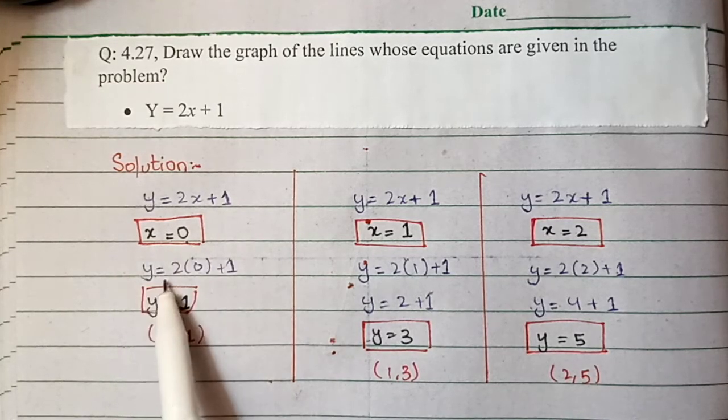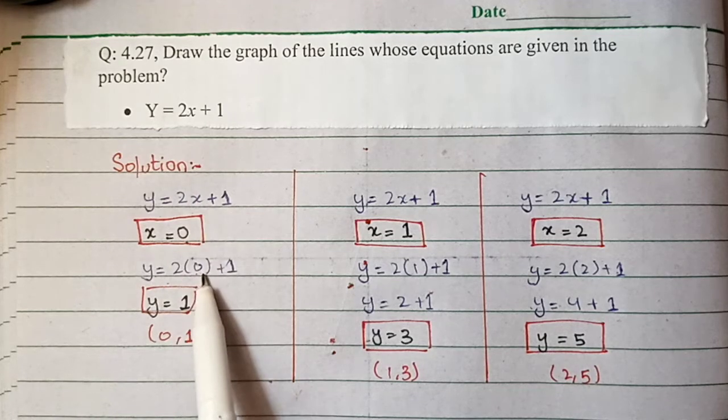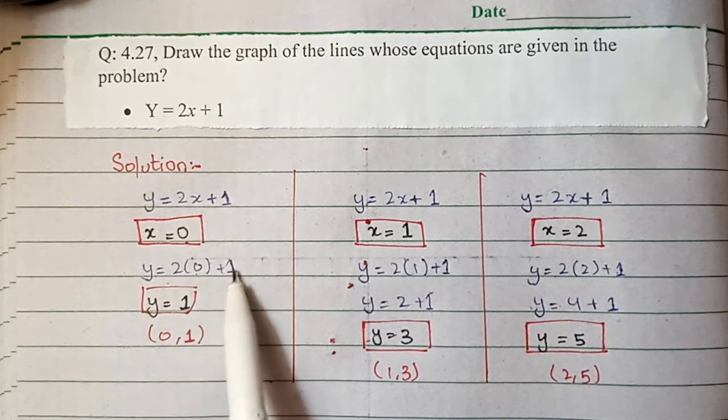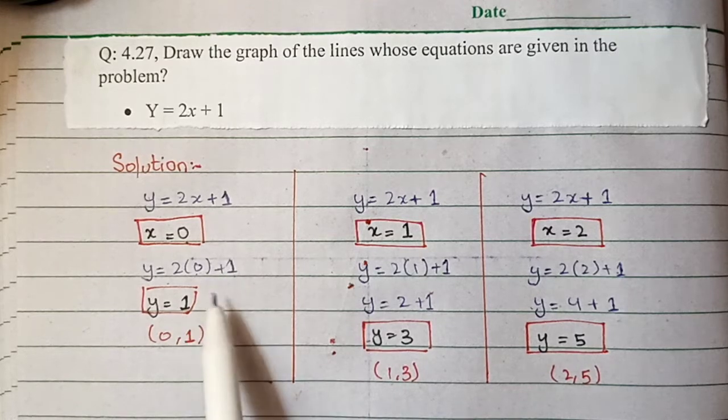So Y = 2(0) + 1. Y = 0 + 1, which equals 1. So when x = 0, y = 1.